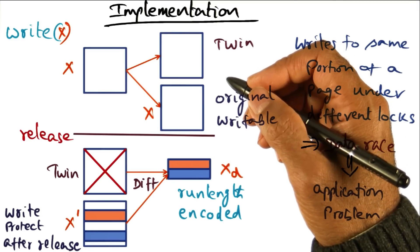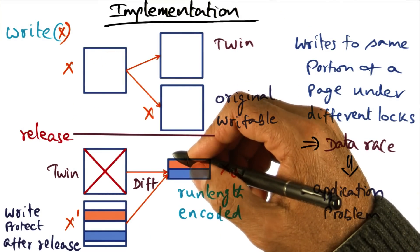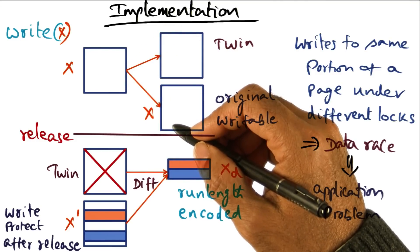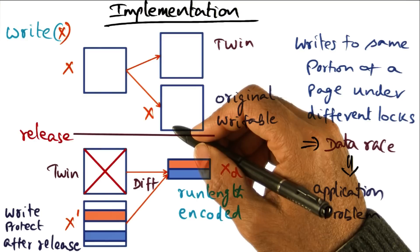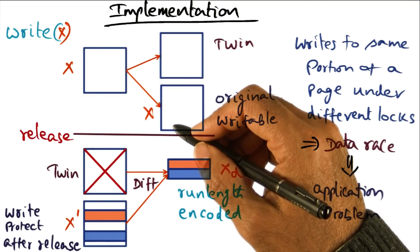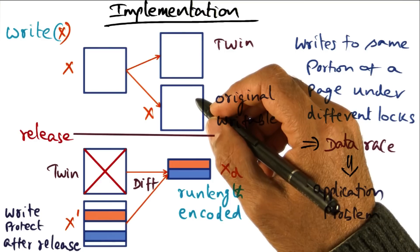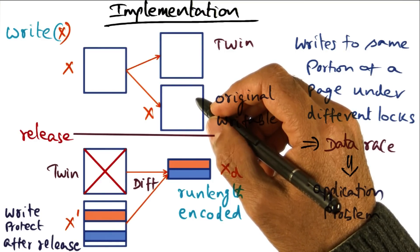This is a multiple writer protocol, which means that this action can be happening simultaneously for the same page X on different nodes of the cluster. That's perfectly fine as far as the protocol is concerned, because the assumption is that the user has an association between locks and the data structure governed by the lock. So even if the same page is being modified, hopefully different portions of the same page are being modified, because concurrently different locks are protecting the portions of the page being modified by different processes.